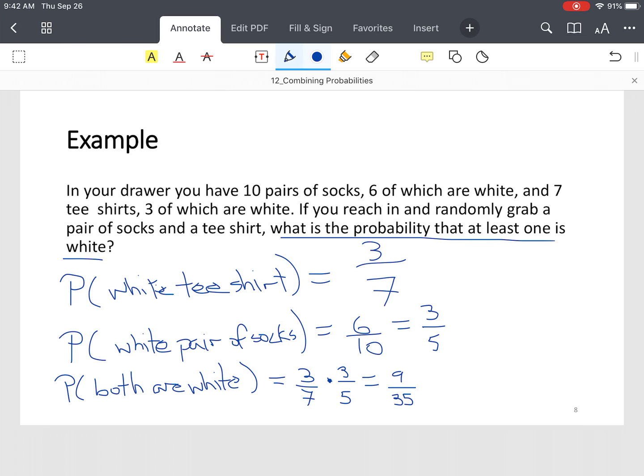So find the probability of a white t-shirt or a white pair of socks. We're going to take our three-sevenths plus our three-fifths, and we're going to subtract 9 thirty-fifths. Now notice your denominators are not the same, so you need a common denominator. In this case, it's 35.